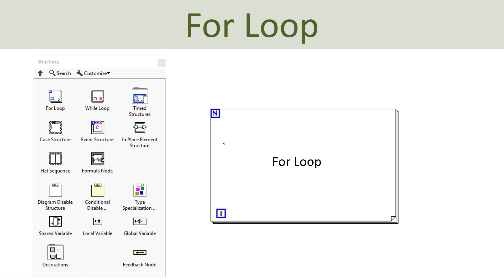Here, when you are in the LabVIEW environment and in the block diagram where you create your code, you right-click on the block diagram and you will get this palette. You can then select Structures, and under Structures you have different loops and structures: for loop, while loop, event structure, case structure, etc. In this tutorial we will use the for loop — you just drag it to your block diagram. All the code that you place inside the for loop will be executed as part of it.